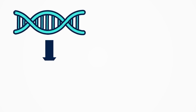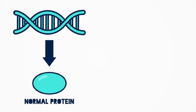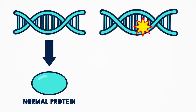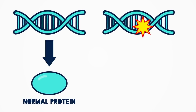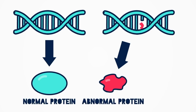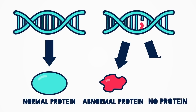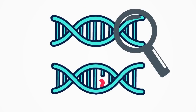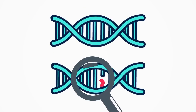Typically, a gene codes for a normal protein. But when there's a mutation or a change in that gene, it may cause an abnormal protein or no protein to be made. So it's these mutations that we look for when we're doing genetic testing.